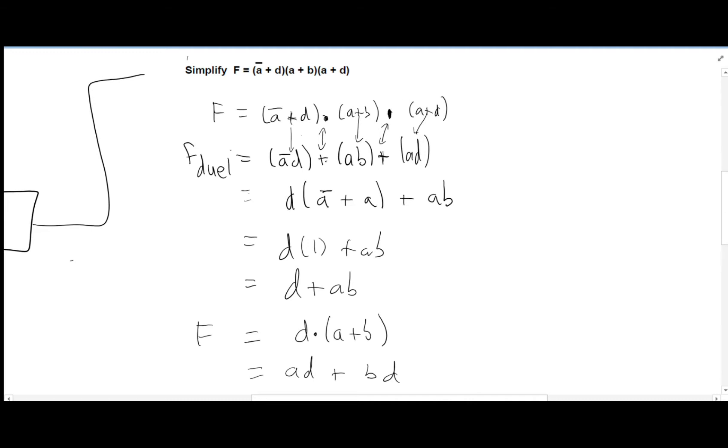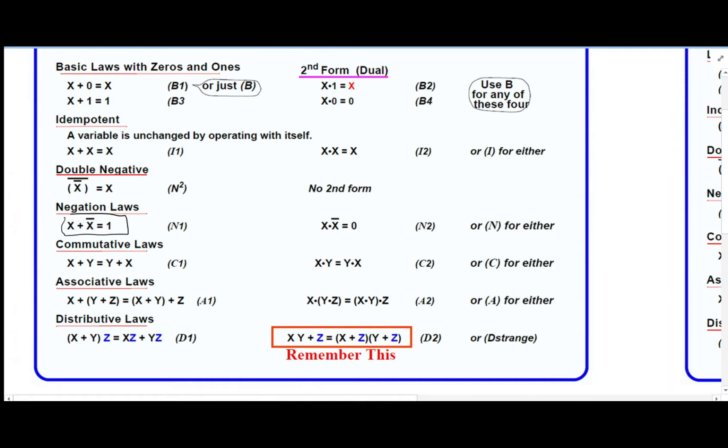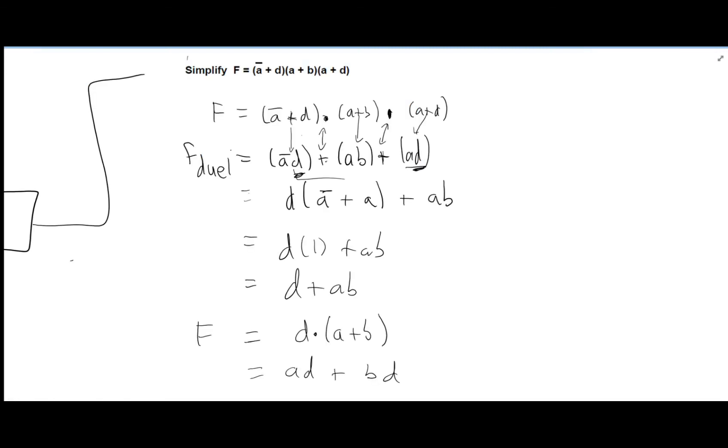The next thing I do is I take a common factor. As you can see, this d and this d are common factors of these two terms. So I factor out the d and I have a bar plus or a naught or a. Now if you don't remember, here's the basic laws, and over here it says x or x naught is equivalent to 1. So if I go back over here, this is the same thing as x or x. So we can simplify that to 1. And then you have d plus ab.